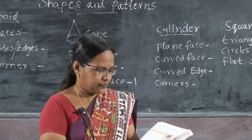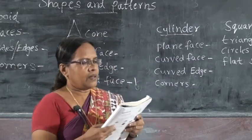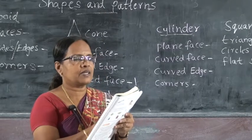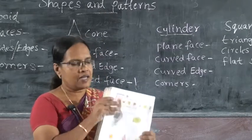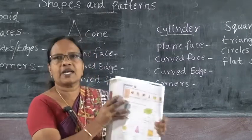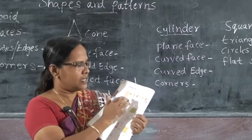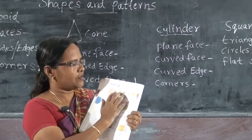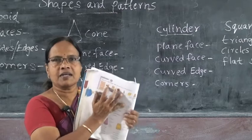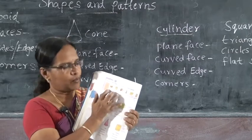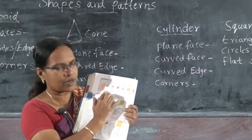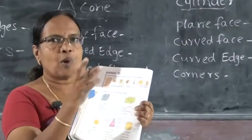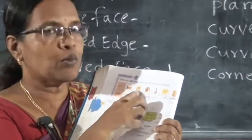Name the solid shapes that you can see in these objects. First, we have a cylinder shape. This is a cylinder shape. Next, book — opposite sides are equal.